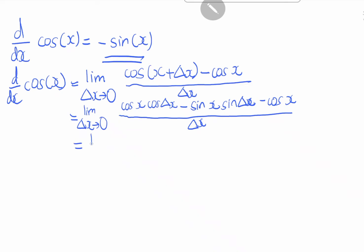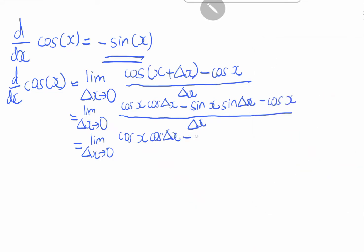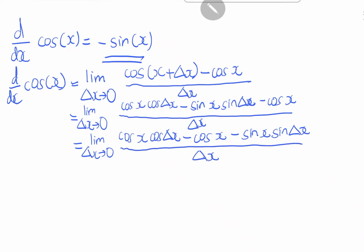This equals the limit as delta x goes to 0 of cosine x cosine(delta x) minus cosine x, minus sine x sine(delta x), all over delta x.